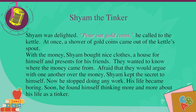Shyam was delighted. 'Pour out gold coins,' he called to the kettle. At once, a shower of gold coins came out of the kettle spout. With the money, Shyam bought nice clothes, a house for himself and presents for his friends. They wanted to know where the money came from. Afraid that they would argue with one another over the money, Shyam kept the secret to himself.